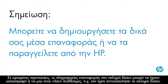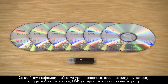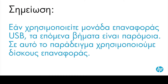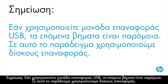In some cases, the recovery information on the hard drive may be missing or damaged, such as when a hard drive is replaced. When this happens, it is necessary to use the recovery disks or a recovery USB drive to recover your computer. If you are using a USB recovery drive, the following steps will be similar, but for this example we are using recovery disks.